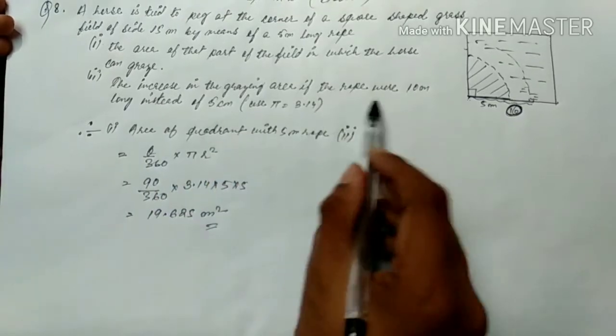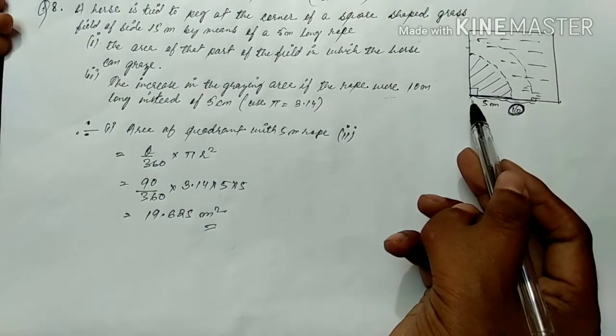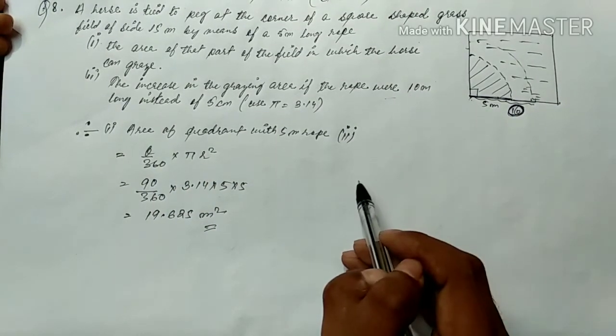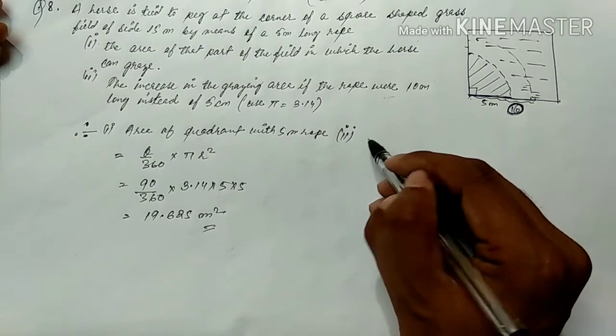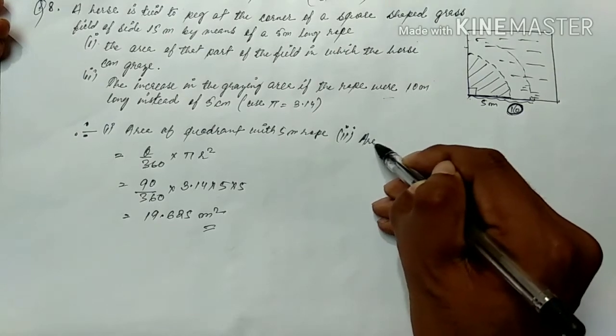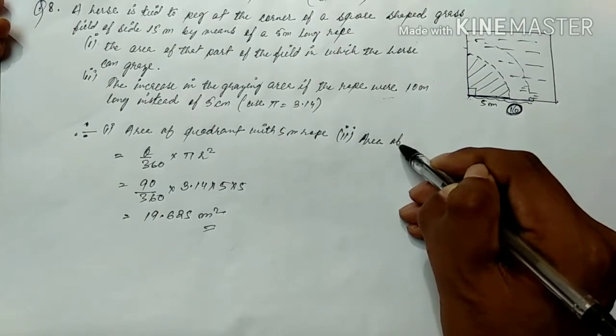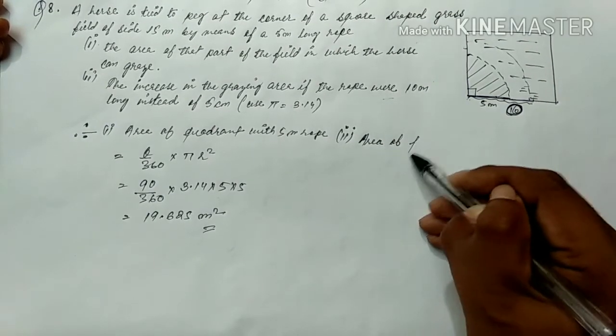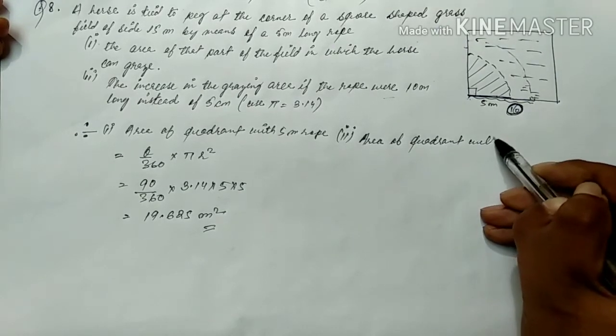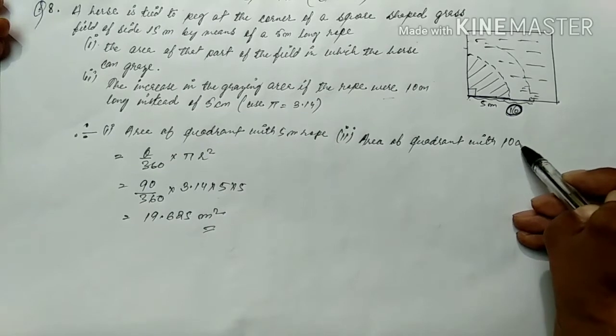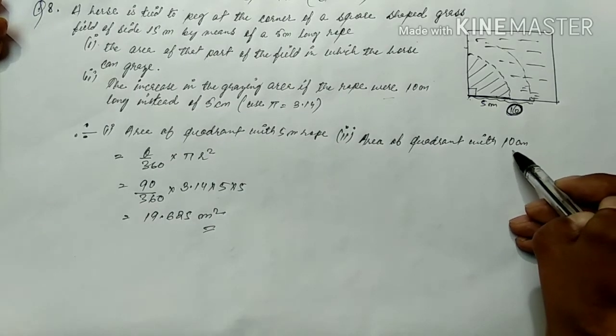If the rope is increased to 10 meters, then find the difference. First we have area of quadrant, then we have area of quadrant with 10 cm. This is the meter.